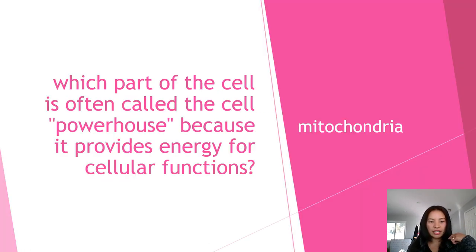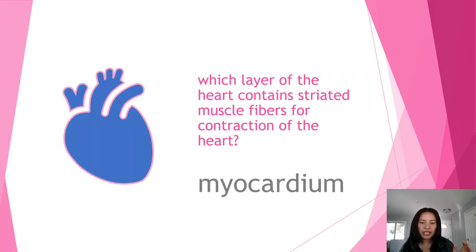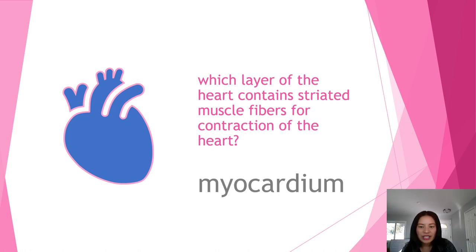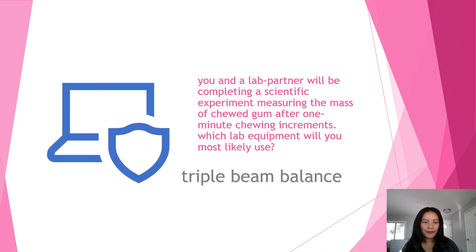The part of the cell often called the powerhouse is the mitochondria, because it provides energy for cellular functions. The layer of the heart that contains striated muscle fibers for contraction of the heart is the myocardium. The blood vessel that contains the least oxygenated blood is the pulmonary artery.